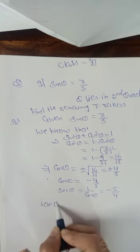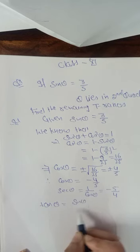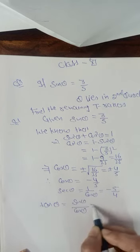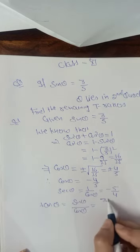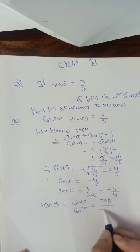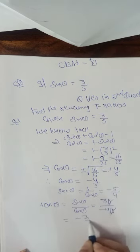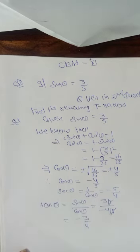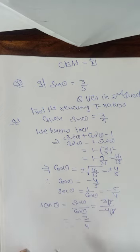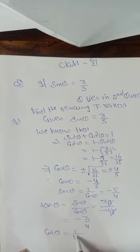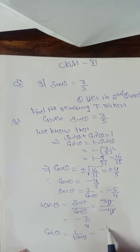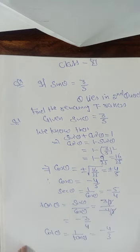tan θ = sin θ / cos θ. The value of sin θ is 3/5 and cos θ is −4/5, so tan θ = −3/4. Because θ lies in the second quadrant, the value of tan θ is also negative. Now cot θ = 1/tan θ, so cot θ = −4/3.